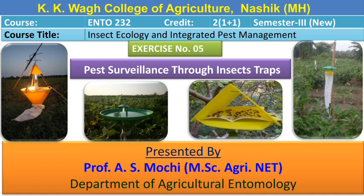This exercise includes the different insect traps. With the help of these insect traps, we can survey or do surveillance of the pest. We can conduct pest surveillance through different insect traps, which include light traps, pheromone traps, sticky traps, and so on. Let us see one by one which are the different insect traps we can use for pest surveillance.